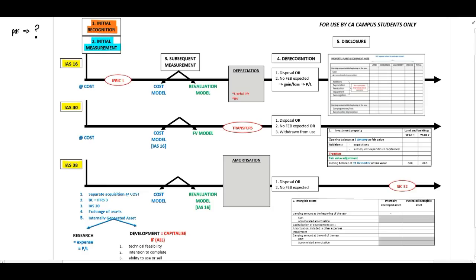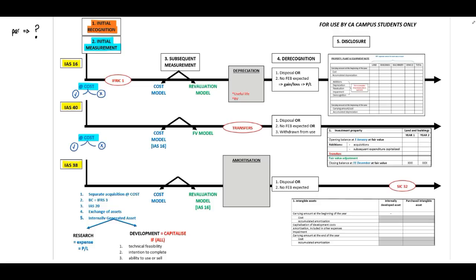For IAS 16, initial measurement will be at cost. For IAS 40, this will also be at cost. Importantly, both IAS 16 and IAS 40 indicate which costs should be included and excluded, so you need to ensure you know which costs to include and exclude. For IAS 38, there are five different types of how an intangible asset can be acquired. The first type is a separate acquisition, where you recognize the asset at cost. IAS 38 also indicates which costs are included and excluded.